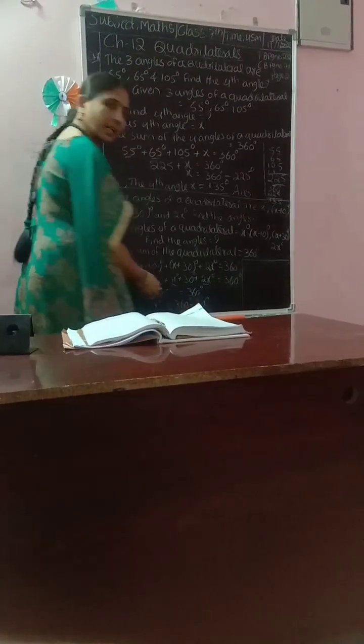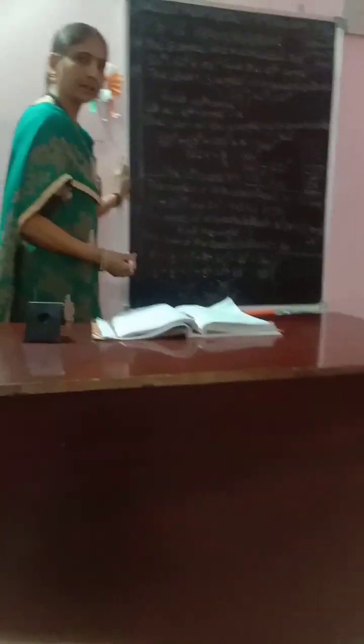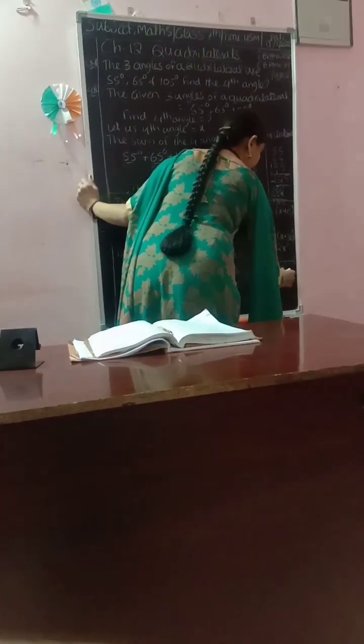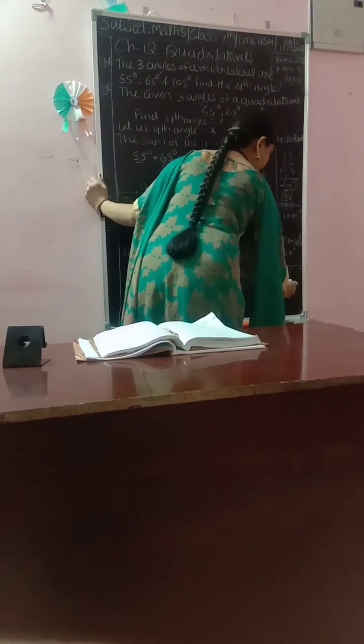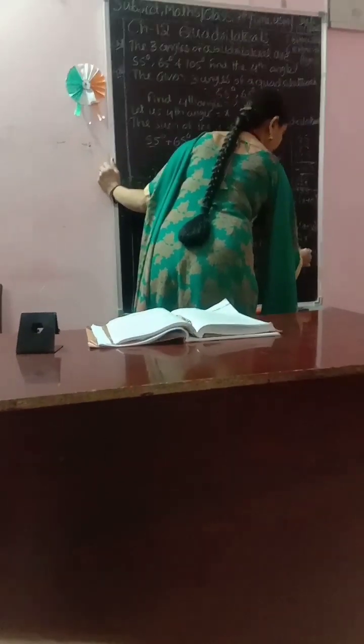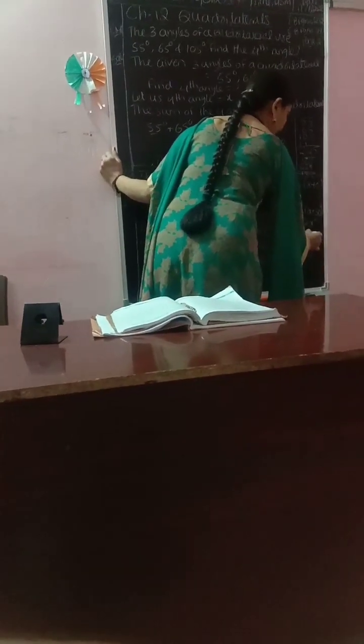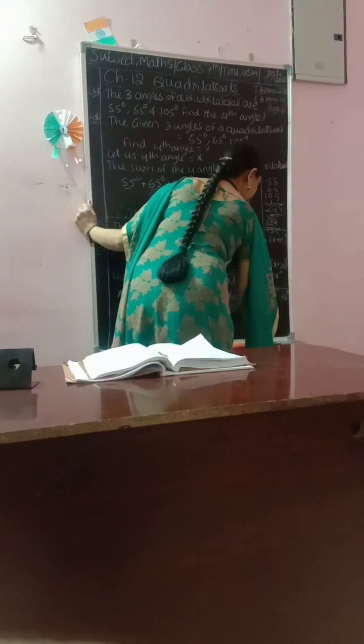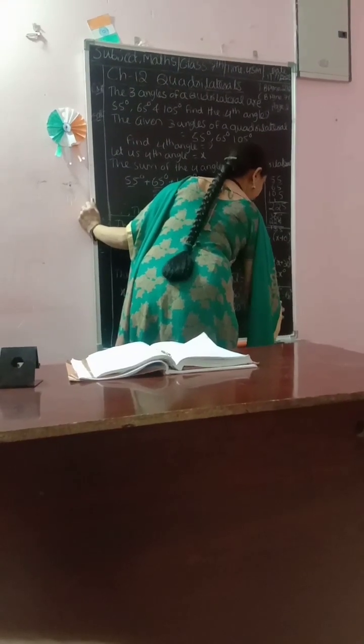5x degrees equal to 340 degrees. Next, x degrees equals 340 degrees divided by 5 only. So x degrees equal to 68 degrees.